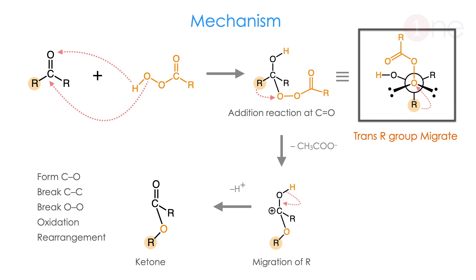Let us see the mechanism. Here I have highlighted the migrating group with an orange circle. The catalyst adds to the carbonyl group — hydrogen on oxygen, the remaining part on the electrophilic carbon. The R group migrates simultaneously with the formation of the ketone intermediate. The final product is the ester. Importantly, there is formation of a C–O bond, breaking of a C–C bond, and breaking of an O–O bond.